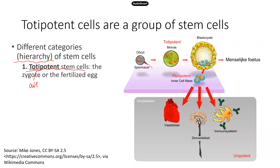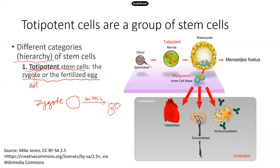These totipotent cells are basically the zygote, or the fertilized egg. Once the sperm fertilizes the oocyte, it becomes a zygote — a single cell that can go through rapid mitosis and eventually divide into many, many cells. So this zygote cell has the ability to become really all kinds of different cells in your body. The zygote, or the fertilized egg, is the totipotent stem cell. It can become anything in our body.